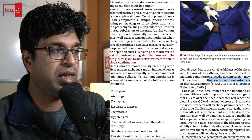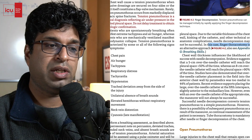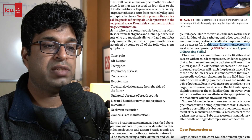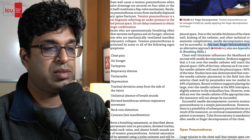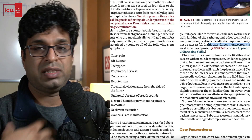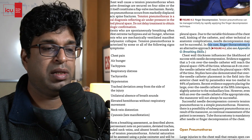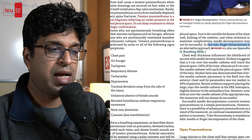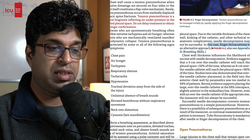Here in the ATLS 10th edition manual you can see: chest wall thickness influences the likelihood of success with needle decompression. Evidence suggests that a 5 cm over-the-needle catheter will reach the pleural space only 50% of the time, whereas an 8 cm over-the-needle catheter will reach the pleural space more than 90% of the time. So an 8 cm needle will succeed 90% of the time, while a 5 cm needle may fall short due to the pectoralis major muscle.